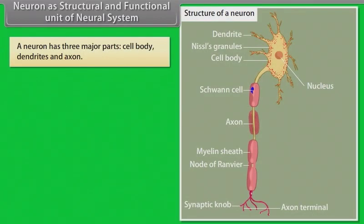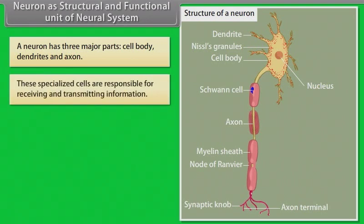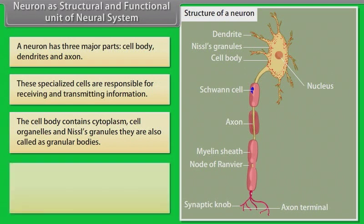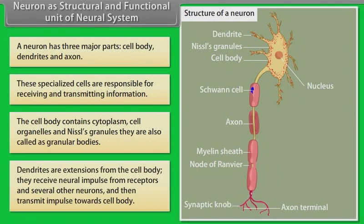A neuron has three major parts: the cell body, dendrites, and axon. These specialized cells are responsible for receiving and transmitting information. The cell body contains cytoplasm, cell organelles, and Nissl's granules, also called granular bodies. Dendrites are extensions from the cell body.